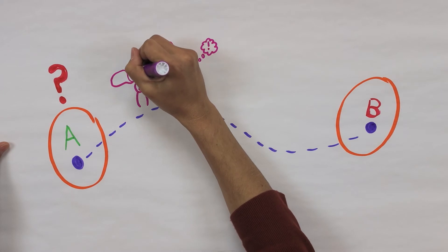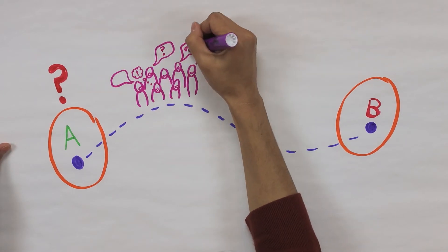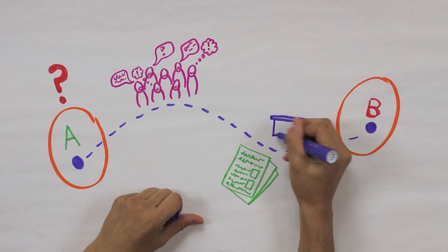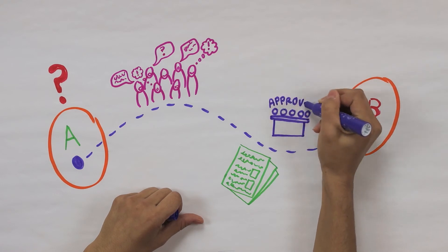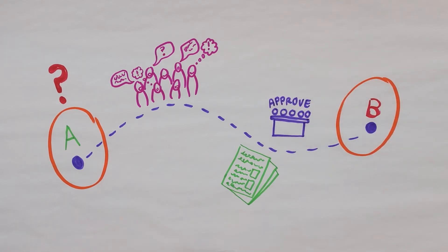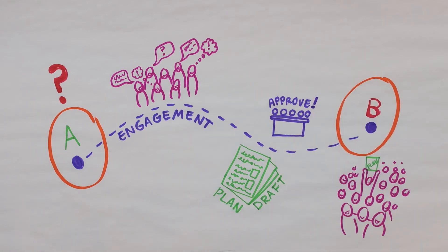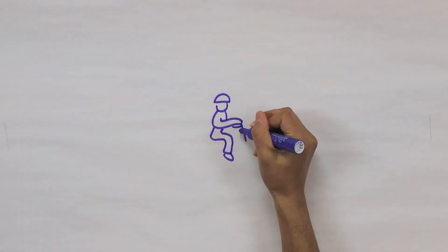Then we take everyone's ideas to create a first draft of the plan. We take it back to the community to see if we got it right. We do this until we reach consensus on the community's vision. Finally, we adopt the plan.